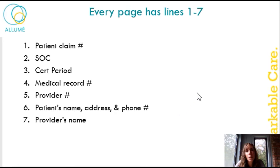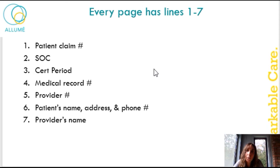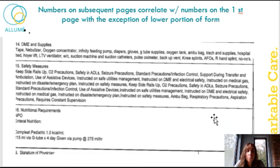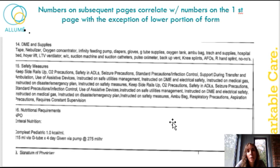Every page has lines 1 through 7. At the top of every page of your care plan you will see a patient claim number, a start of care date, the cert period, the medical record number, provider number, patient's name, address, and phone number, and the provider's name. Numbers on the subsequent pages correlate with numbers on the first page. So on your subsequent pages, you will see that number 14 is the DME and supplies, which is the same as it was on the first page. All this information in these sections will correlate with the number stated on the first page.